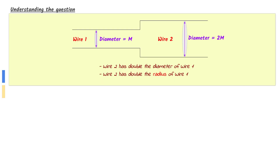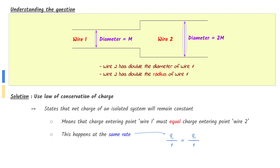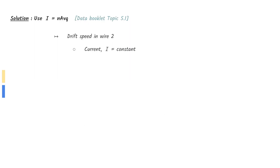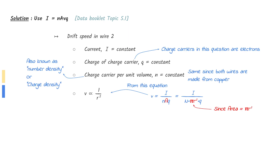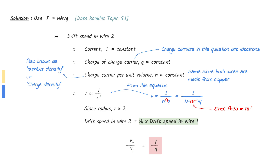Wire 2 has double the diameter of wire 1, which is the same as saying wire 2 has double the radius of wire 1. Through the law of conservation of charge, the amount of charge passing through wire 1 must be the same as through wire 2, and since this happens at the same rate, the current in both wires is the same. To find the drift speed in wire 2, use the equation from the data booklet to find the relationship between drift speed and radius. The current, charge of the charge carrier, and charge density are all constant, leaving drift speed inversely proportional to radius squared. Increasing the radius by 2 decreases the drift speed by 4, so the drift speed in wire 2 is one quarter of wire 1, giving a ratio of 1 over 4.